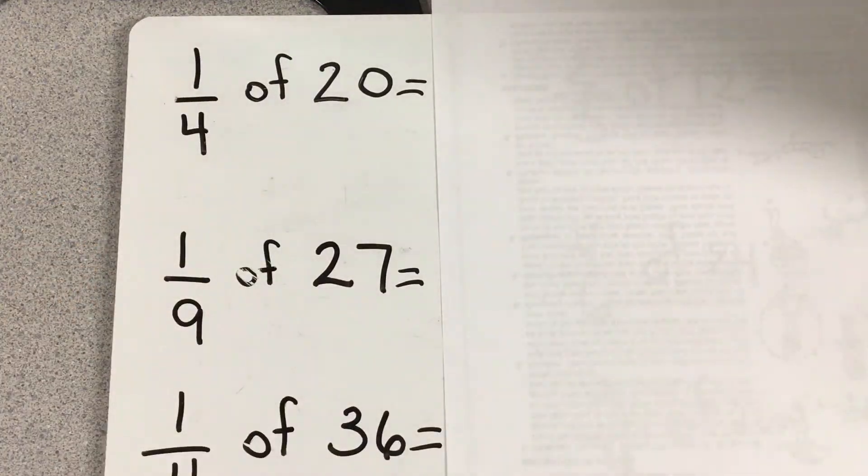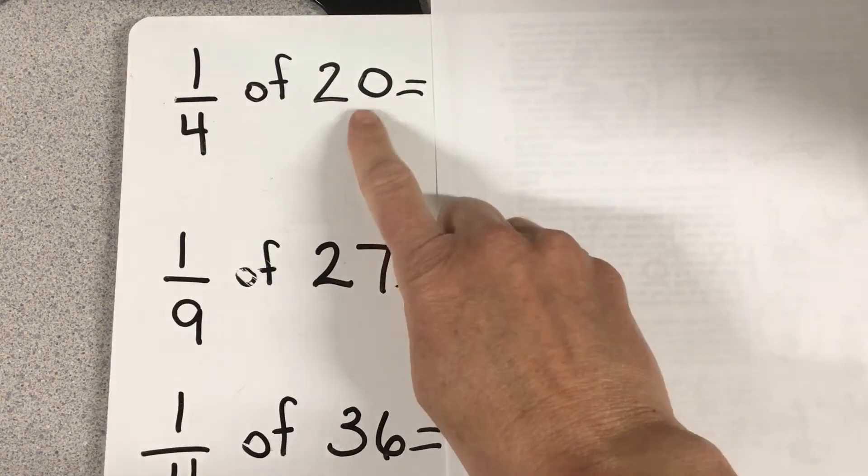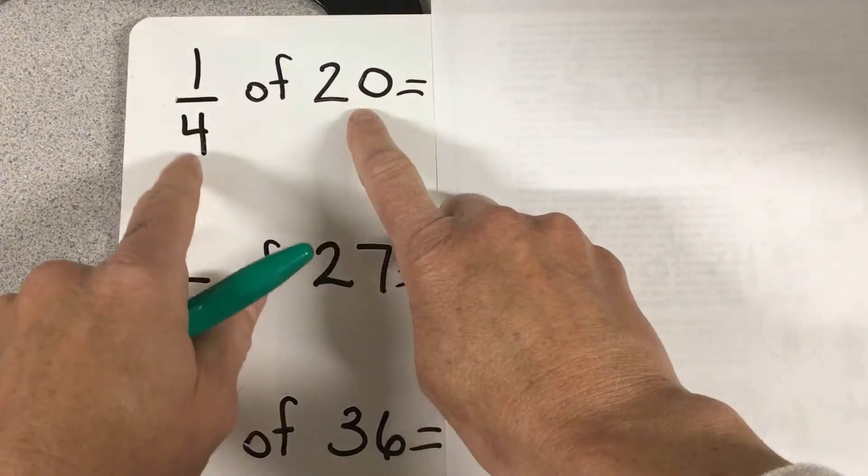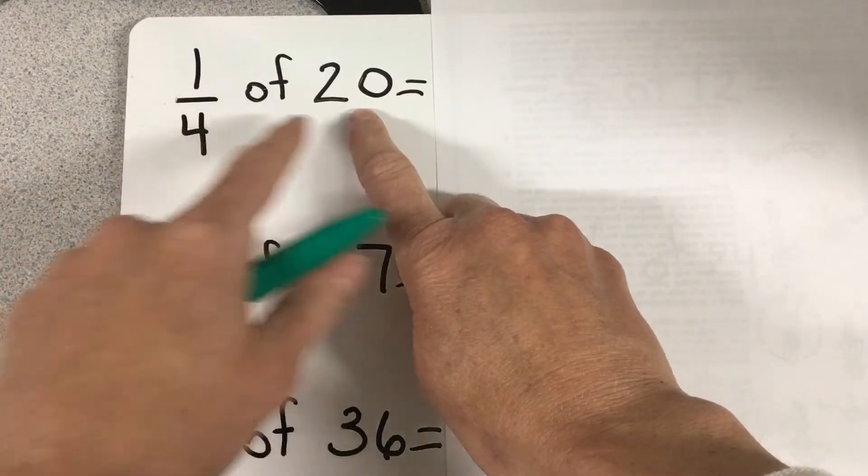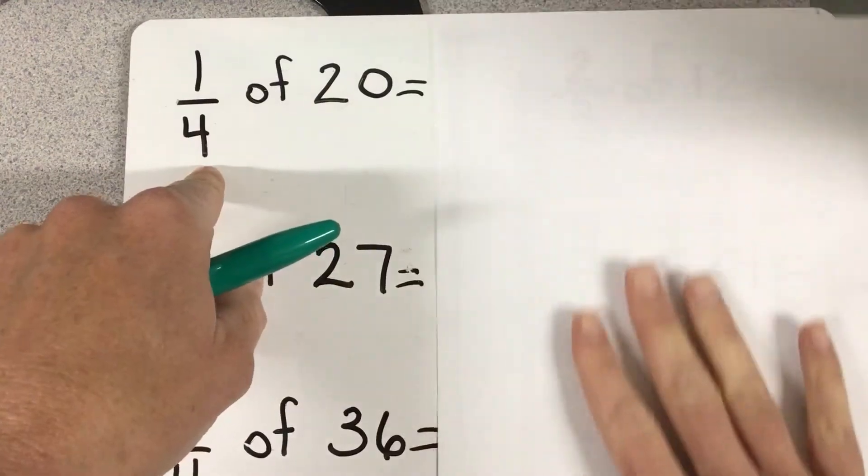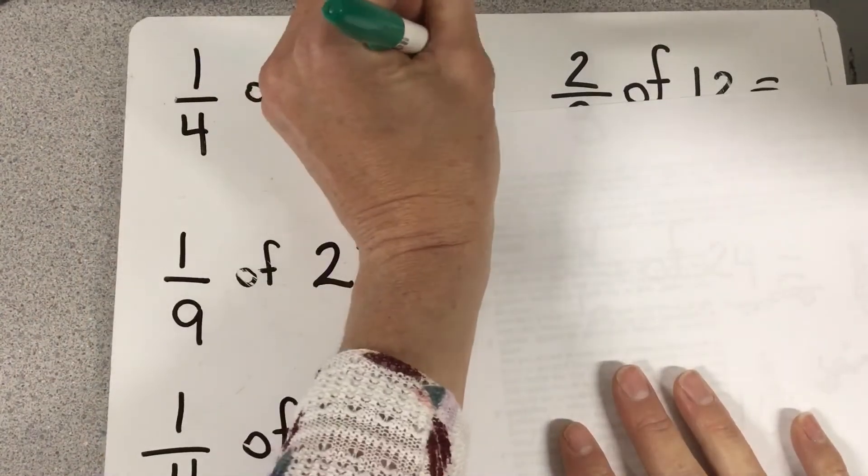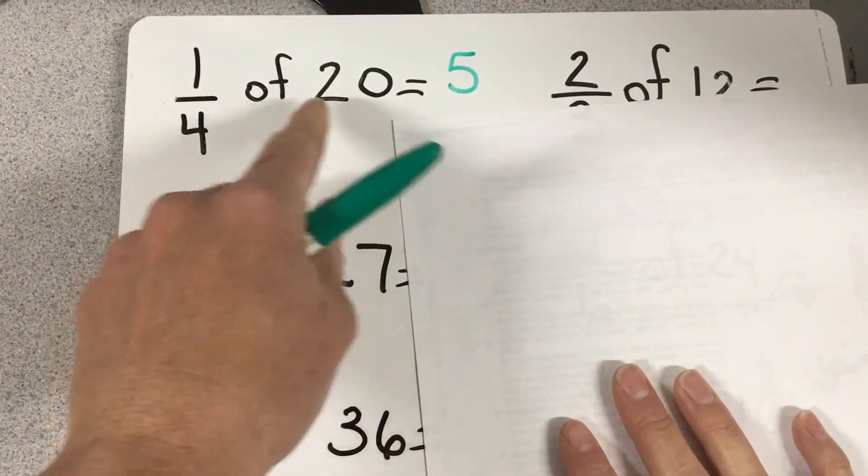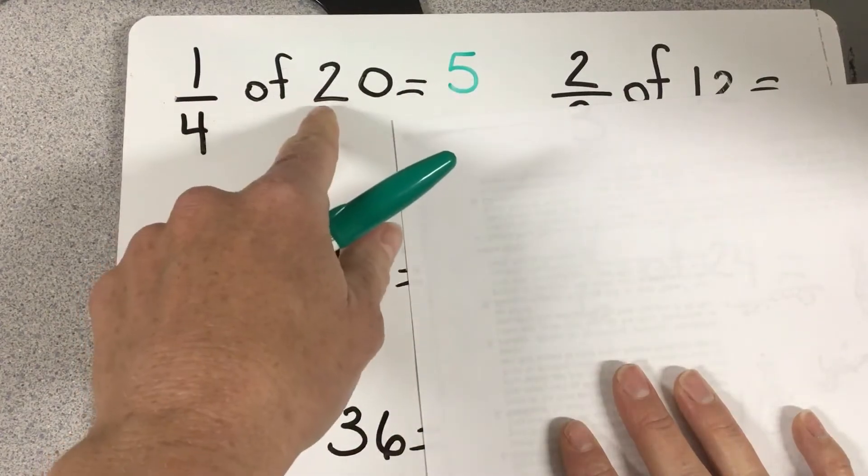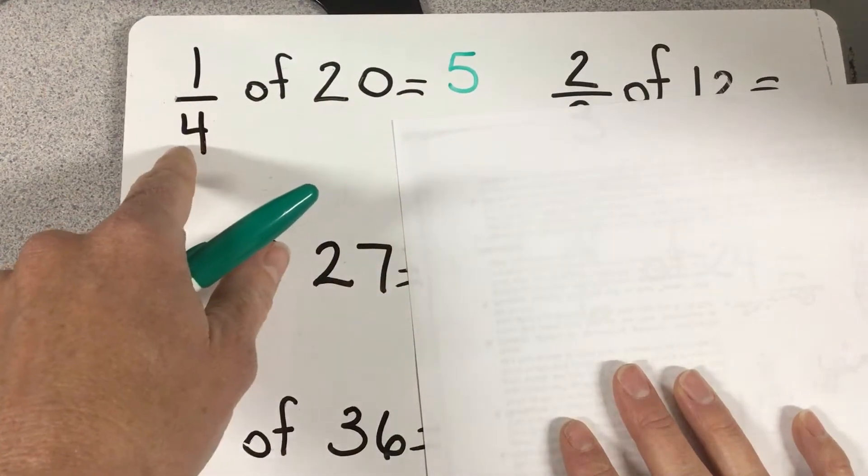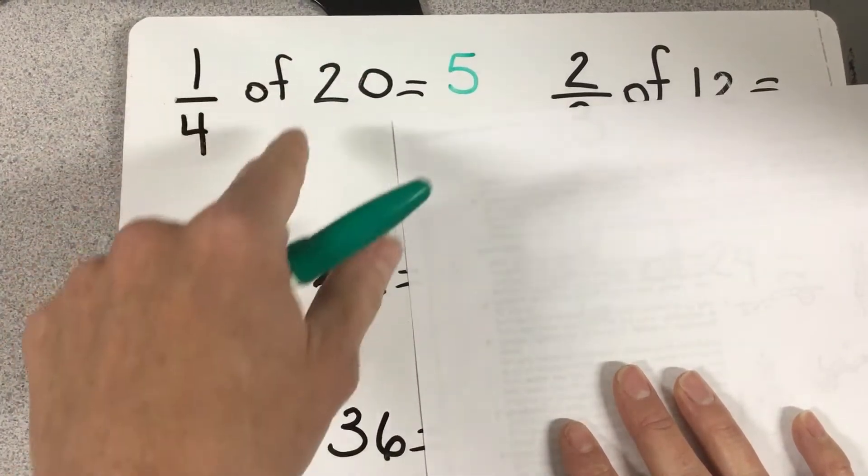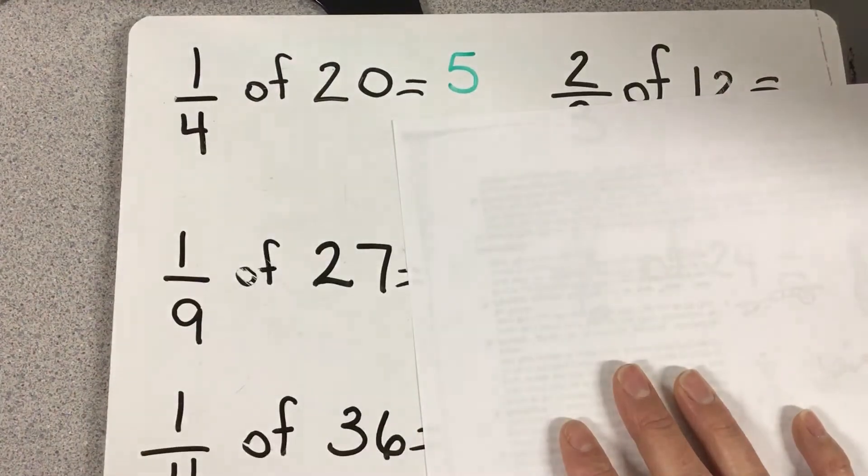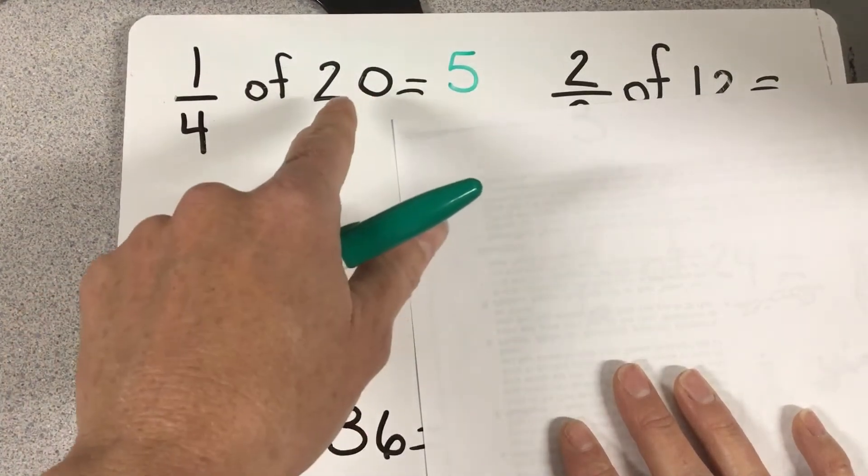When you see questions like 'what's one quarter of 20,' you solve it by taking your bigger number, 20, and dividing it by your denominator, 4. So one quarter of 20: you go 20 divided by 4, and your answer is 5. That means if I was to split 20 into quarters, into sections, each section would get 5. So all you do is take your number and divide it by the bottom number.